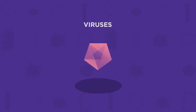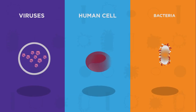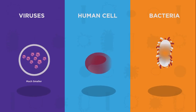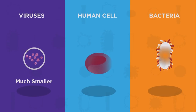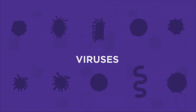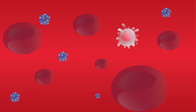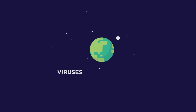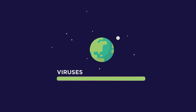In this video we're going to look at what viruses are. Viruses are a type of microorganism. They are too small to be seen by the naked eye, much smaller than bacteria and about a hundred times smaller than human cells. They come in many different shapes and are present wherever there are cells to infect. In fact, viruses are the most common biological unit on earth, outnumbering all other types combined.